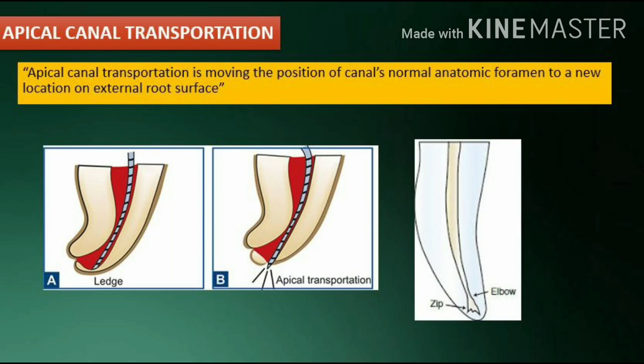Apical canal transportation is the moving of the position of the canal's normal anatomic foramen to a new location on the external root surface. Do not confuse apical canal transportation with apical perforation.